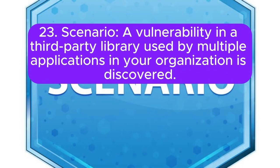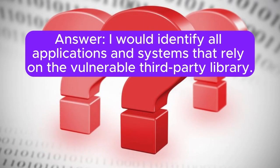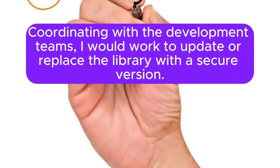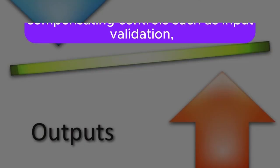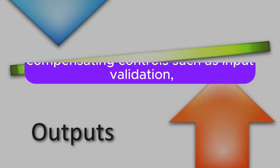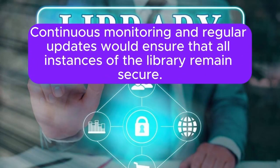Scenario 23: A vulnerability in a third-party library used by multiple applications in your organization is discovered. What steps do you take? I would identify all applications and systems that rely on the vulnerable third-party library, assess the impact of the vulnerability on each application, and prioritize remediation based on criticality and exposure. Coordinating with the development teams, I would work to update or replace the library with a secure version. If an immediate update isn't feasible, I would implement compensating controls such as input validation, access restrictions, or runtime monitoring to mitigate the risk. Continuous monitoring and regular updates would ensure that all instances of the library remain secure.